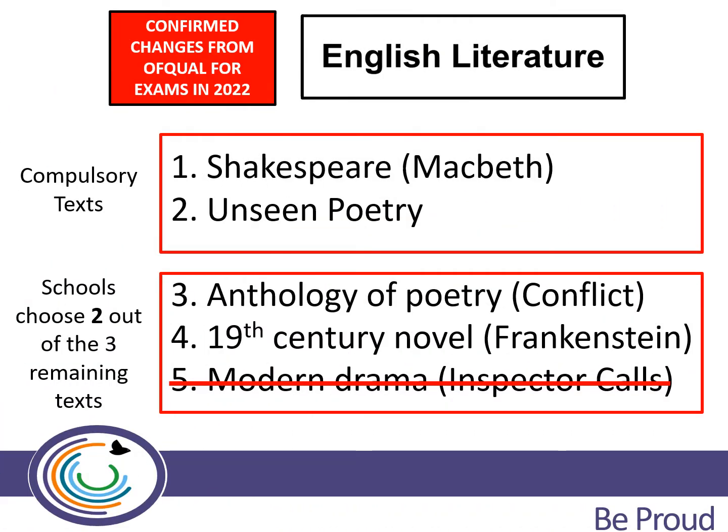The changes to the English Literature exam have now been confirmed by Ofqual. Schools now have the option to drop one of the five elements of the literature course, so the exams will now form two papers: a compulsory paper, and then what they're calling an optional paper.